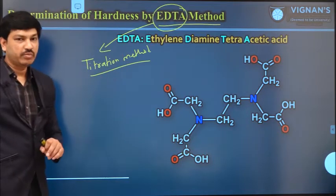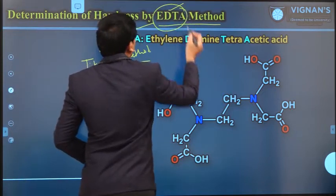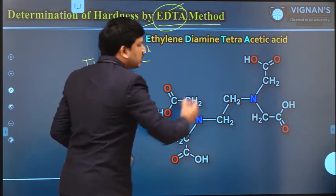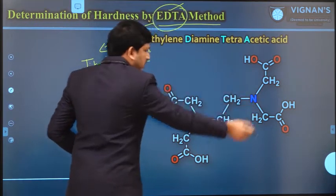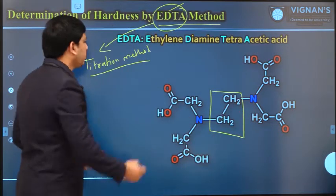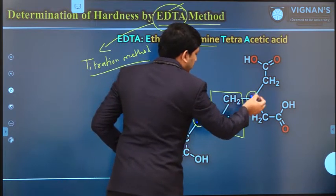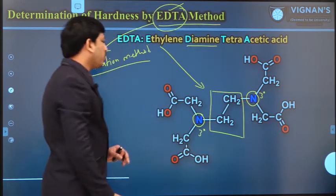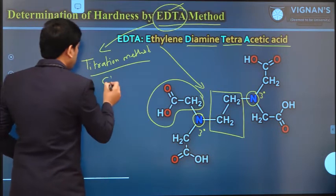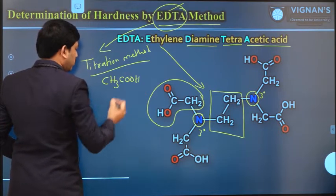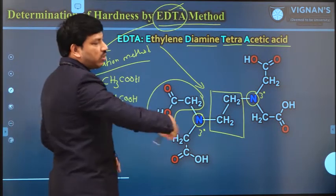EDTA is nothing but an organic molecule. The name itself indicates that it contains an ethylene group. If you see the structure, this is the ethylene group, and then diamine — so we have two amine groups, each are actually tertiary amine groups. And tetraacetic acid — this is the acetic acid group. The formula of acetic acid is CH₃COOH; if you remove one hydrogen the group is called the acetate group CH₂COOH. This molecule contains totally four acetic acid groups.